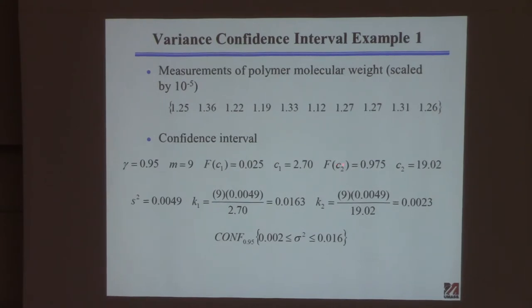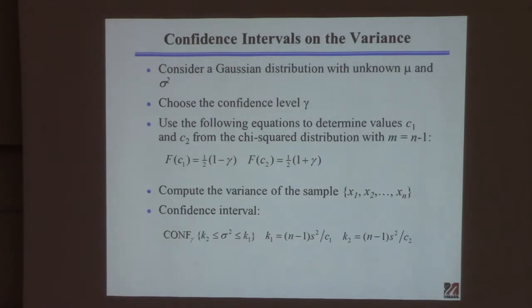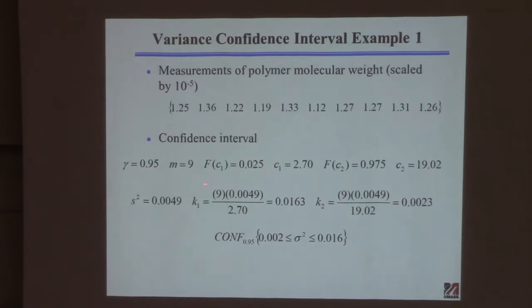That gives your c1 and c2 values. There's your s-squared — already calculated as the variance of those samples. Plug the information into the equation: n minus one multiplied by s-squared divided by c1 gives k1 (upper limit); divided by c2 gives k2 (lower limit). Rounding off, you get the confidence interval.